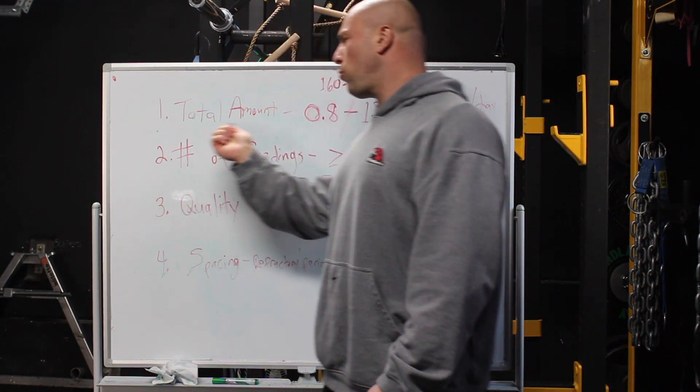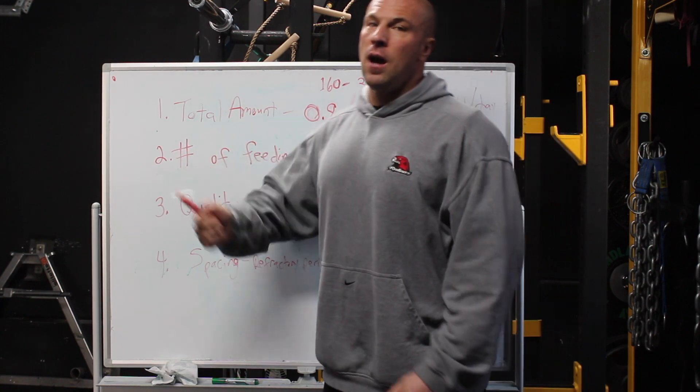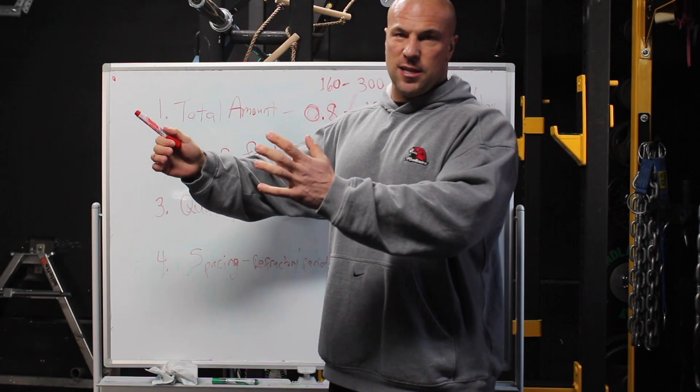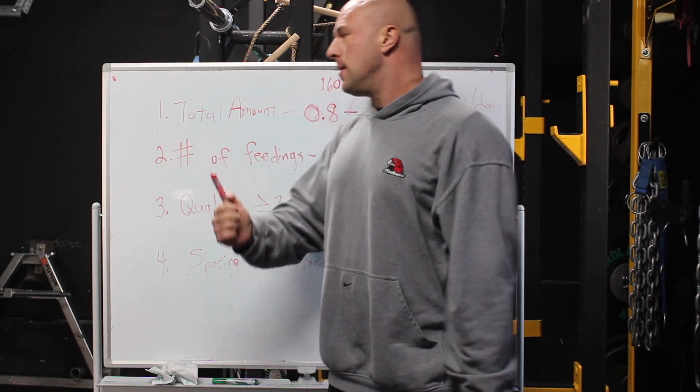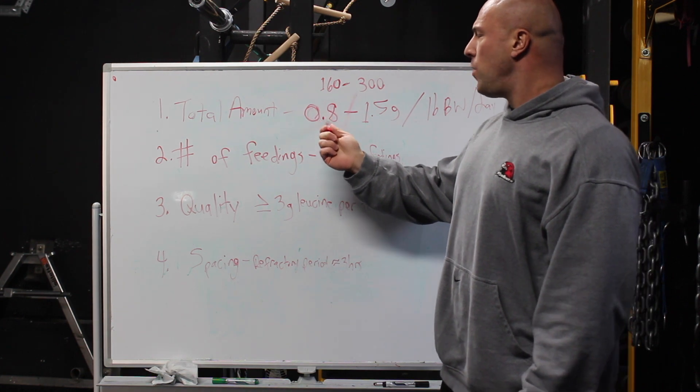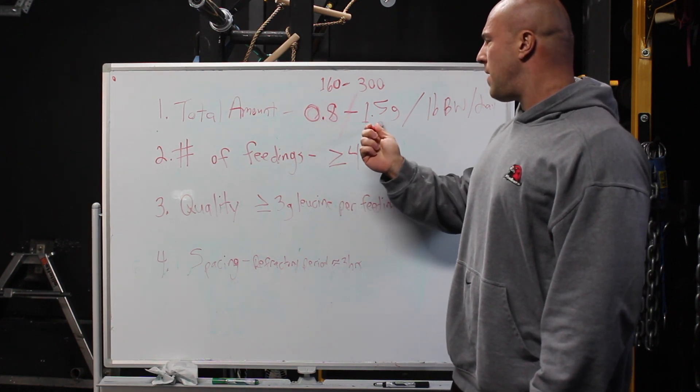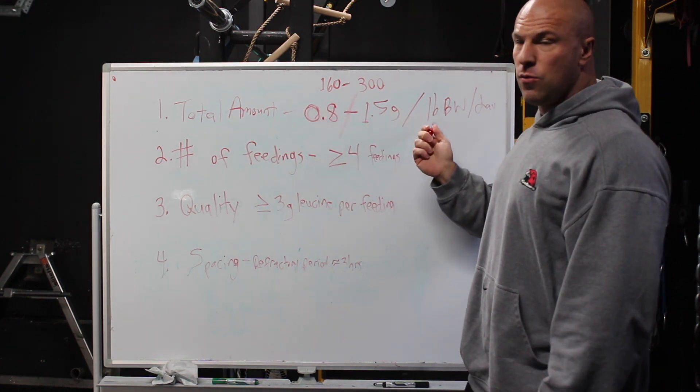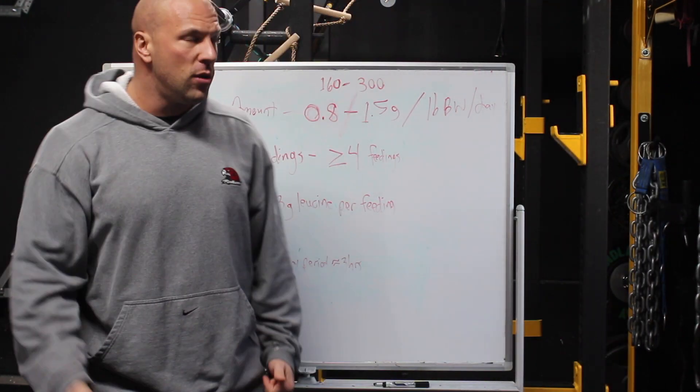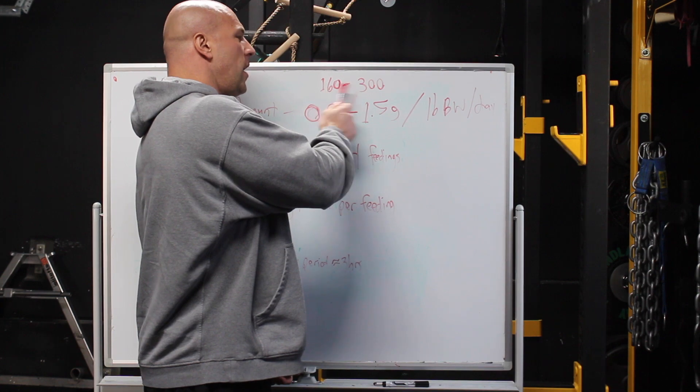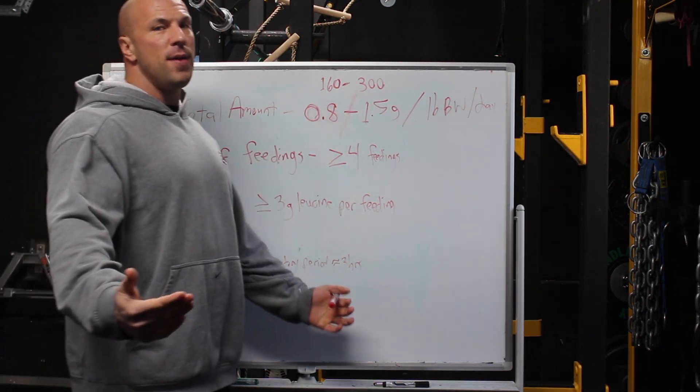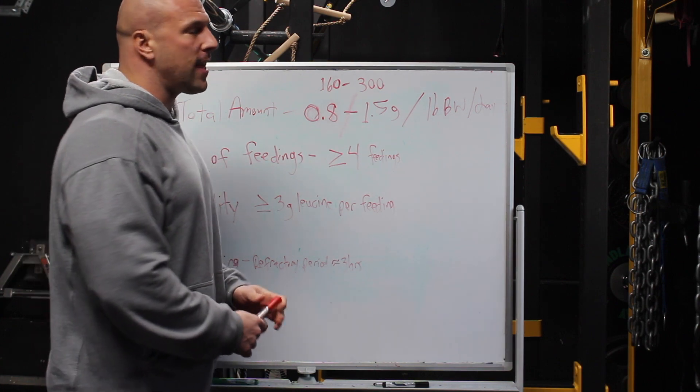These are in order from most important to least important, but really they're all four kind of important things to consider if you truly want to maximize your response to food and exercise. So the first consideration is the total amount of protein you're having per day. If you do nothing else correctly, just make sure you get this much amount of protein per day and it'll be a start. The range is 0.8 grams of protein to 1.5 grams of protein per pound of body weight per day. Gee, Ryan, that's a big range. So for a 200-pound individual, that's between 160 to 300 grams of protein per day. Why that big of a range? Well, because it's a sliding scale.